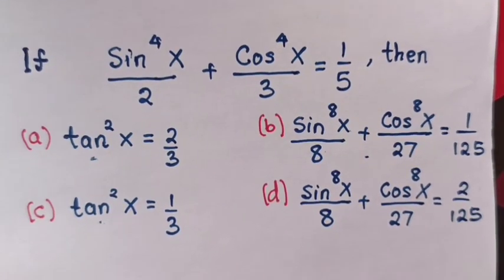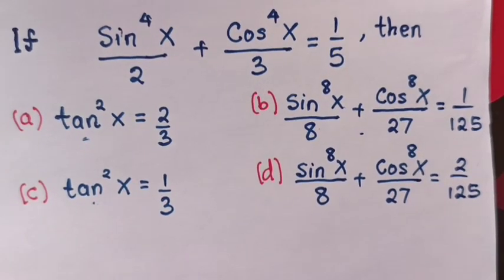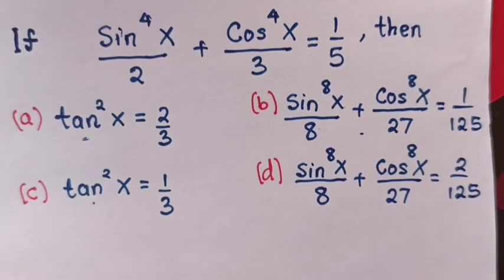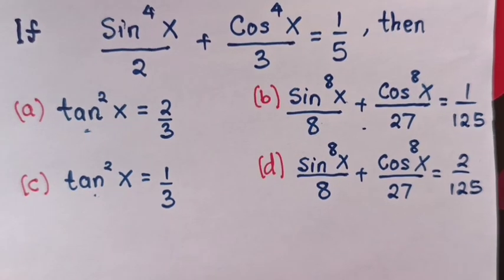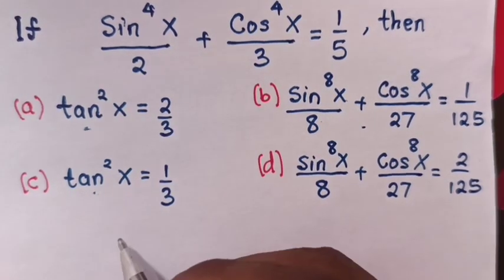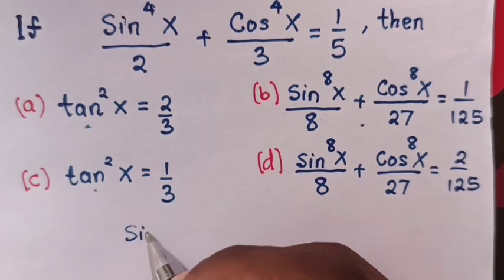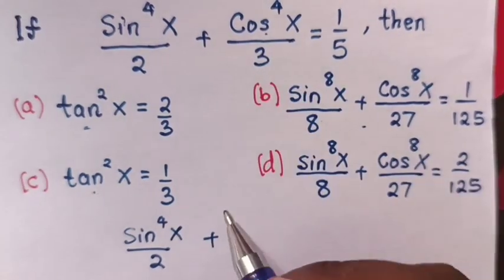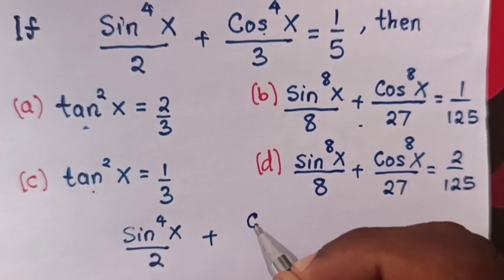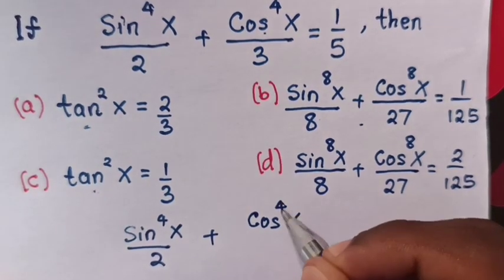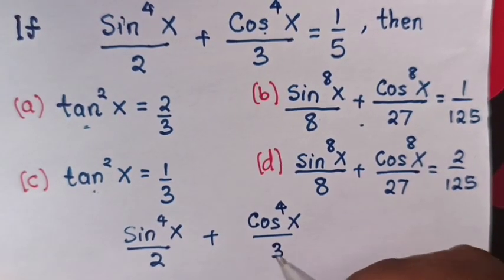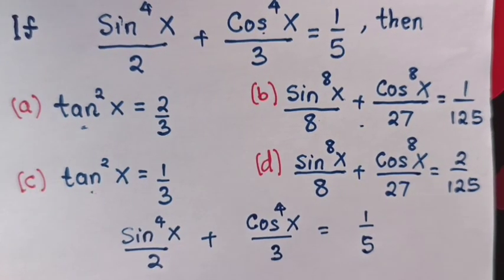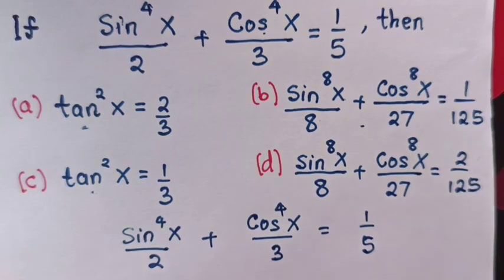Hello. If sin⁴x/2 + cos⁴x/3 = 1/5, then choose a, b, c, or d. From our equation sin⁴x/2 + cos⁴x/3 = 1/5, we are going to solve this equation to find the value of tan²x.